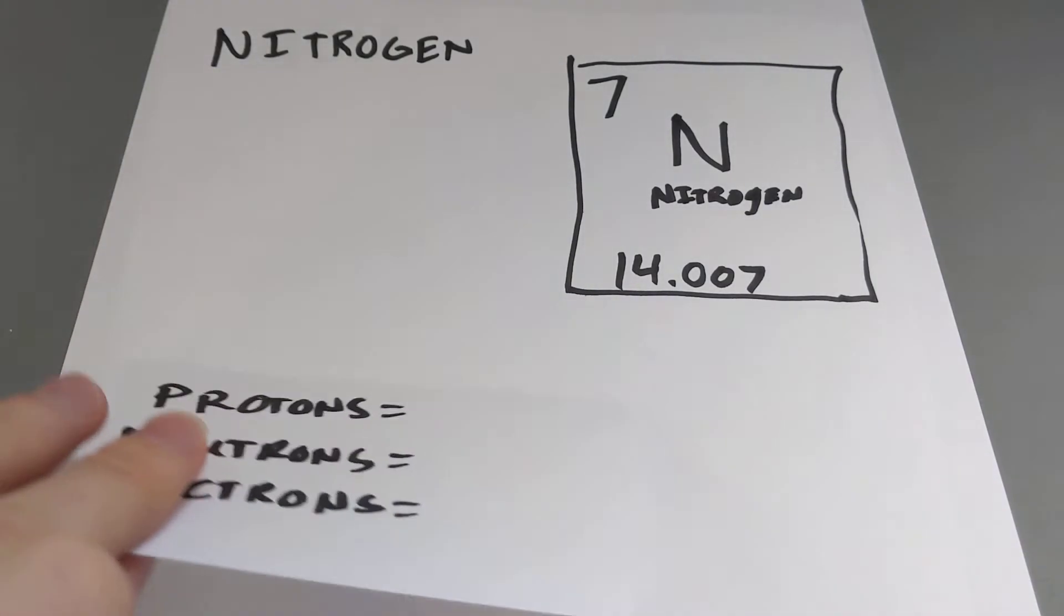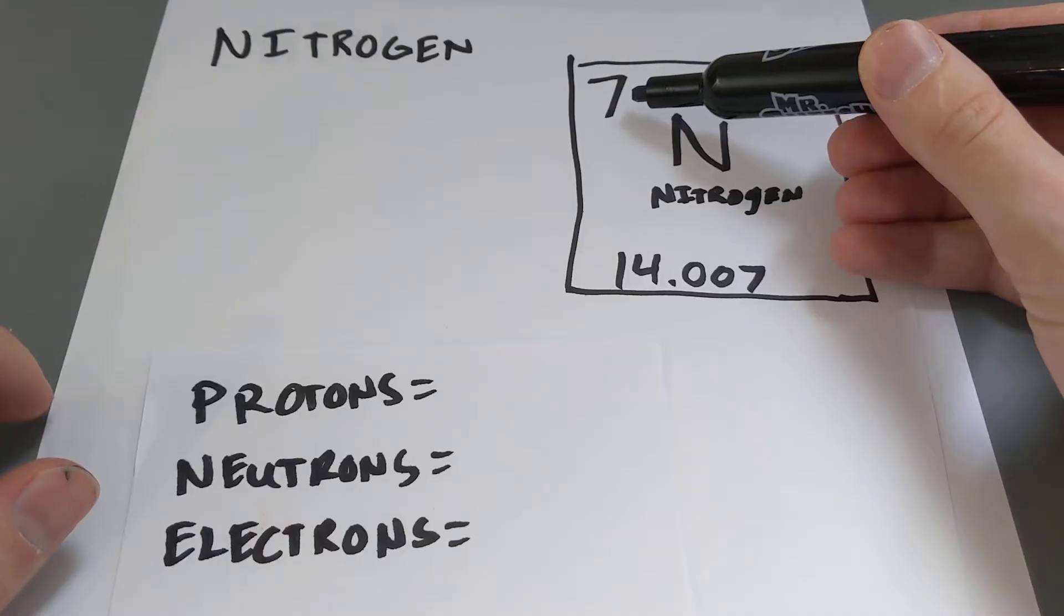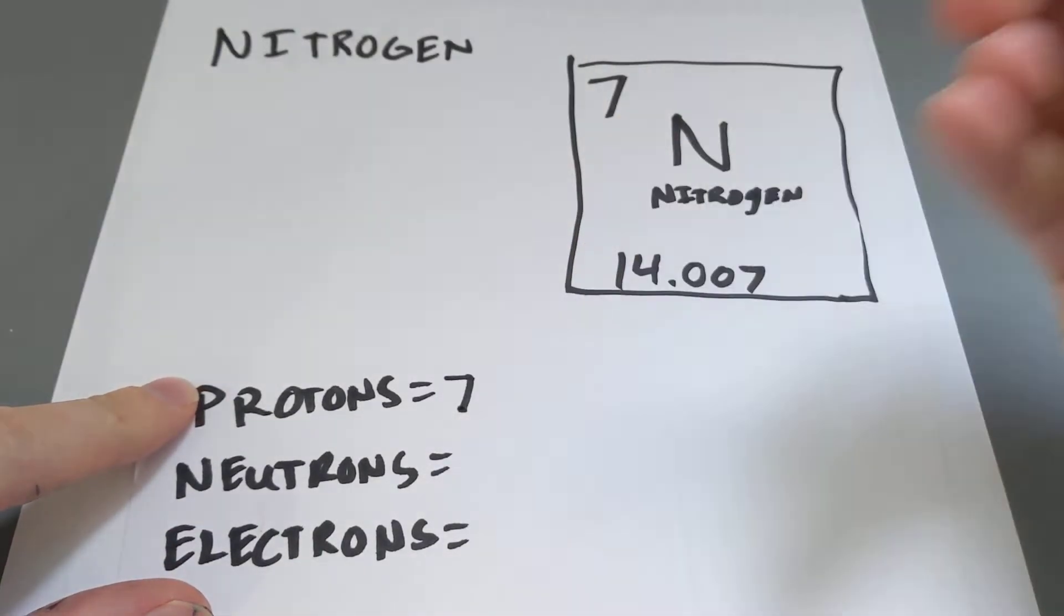The first thing you need to know before drawing a Bohr model or diagram is how many protons, neutrons, and electrons do you have? Well, the 7 for the atomic number tells you you have 7 protons.